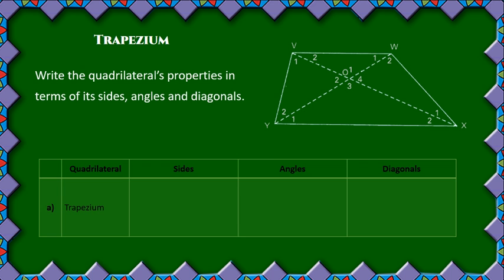In this quadrilateral, let's first start with the sides. It's a trapezium, and with the trapezium, only these two sides are parallel. So therefore, I can state that VW is parallel to YX. The other two sides are neither equal nor parallel.